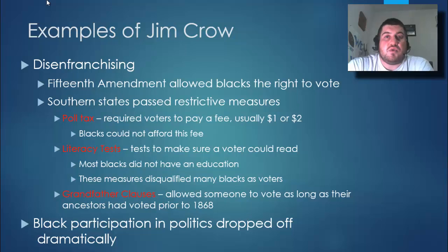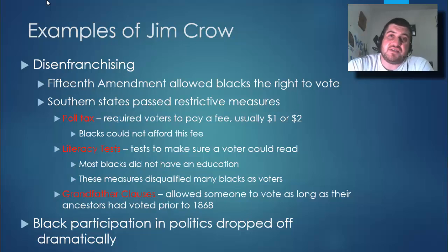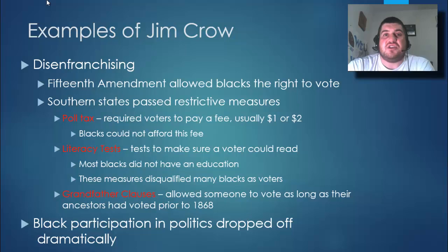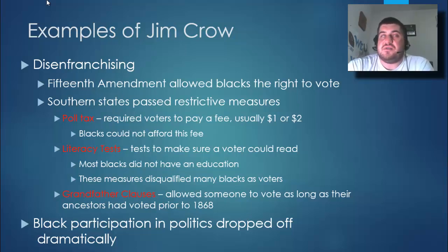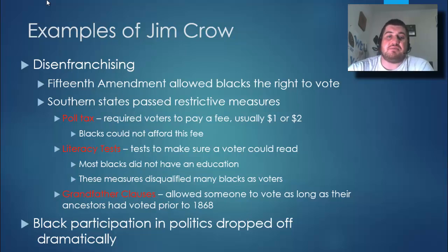Literacy tests were tests to make sure a voter could read. Most blacks at that time did not yet have an education, so that disqualified many as voters. And even if they passed those two, the grandfather clauses allowed someone to vote only if their ancestors had voted prior to 1868. Prior to 1868 they would have been slaves, so they could not vote. Because of these three things, black participation gained during Reconstruction dropped off dramatically.